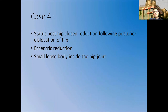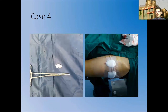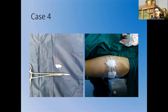Case 4 was a posterior dislocation of the hip which was reduced closed. Post-reduction, eccentric reduction was noted with an irregular joint space. CT showed a small loose body inside the hip joint — a common Indian indication. Arthroscopy was performed, the loose body was removed, and the patient became pain-free. These are the conditions in which hip arthroscopy can be utilized in an Indian perspective.